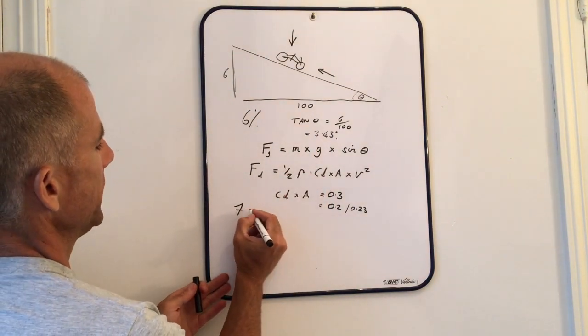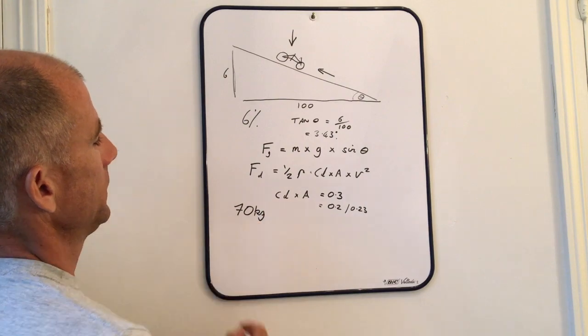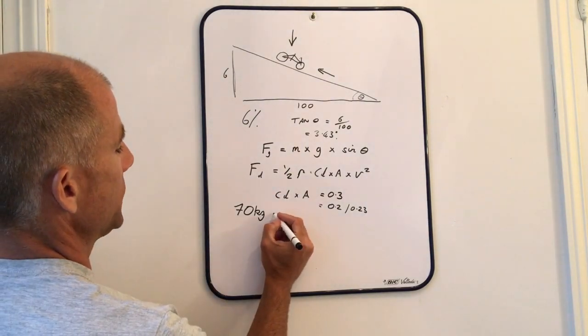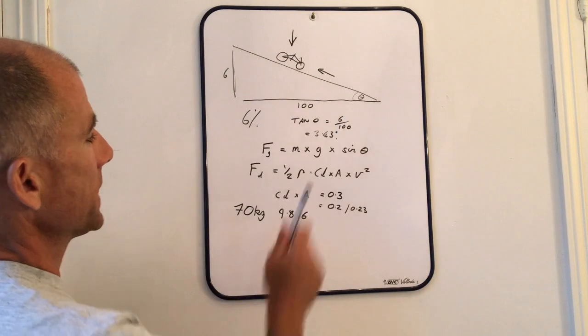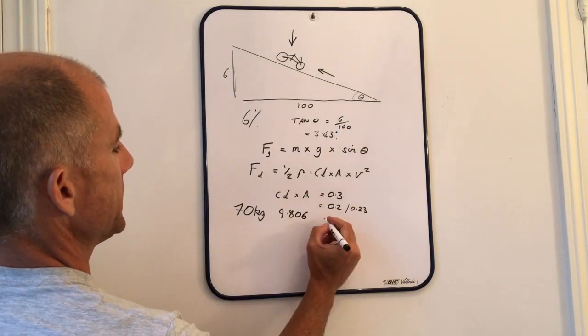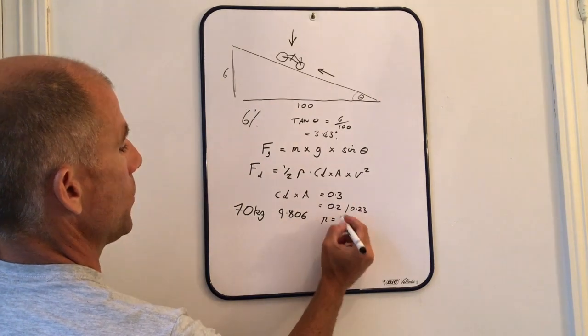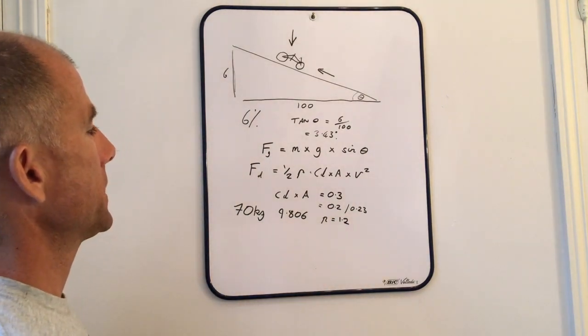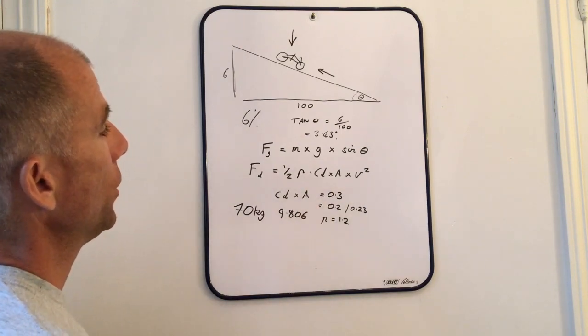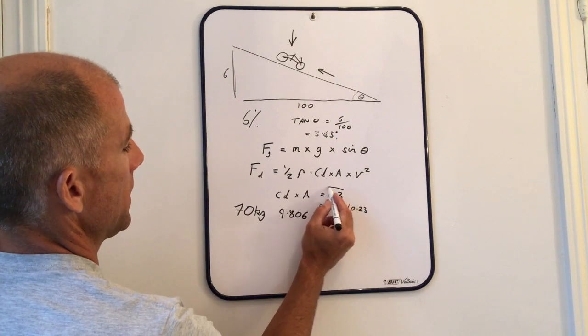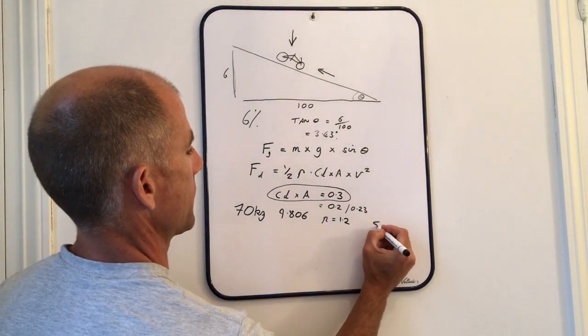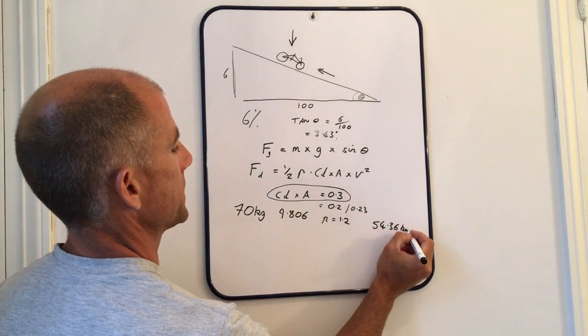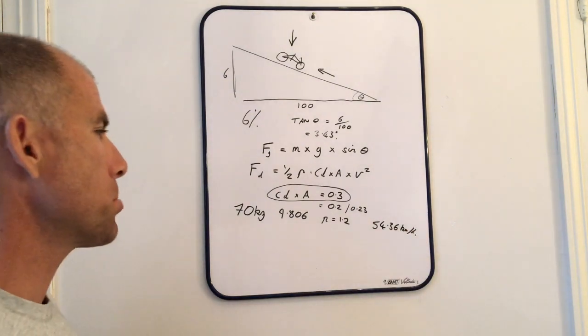Let's use a mass of 70 kilos, that's the bike and the rider. Using the spreadsheet that I created, these forces will be in equilibrium at a speed of 54.36 kilometers an hour.